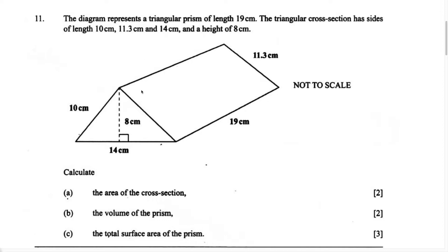They give us a diagram that represents this triangular prism. The question goes on to say: calculate, for part A, they want us to find the area of the cross section. The first step is we must identify what type of shape this is. The question tells us that this diagram represents a triangular prism. Once we know it is a triangular prism, we're going to use the formula to calculate the area.